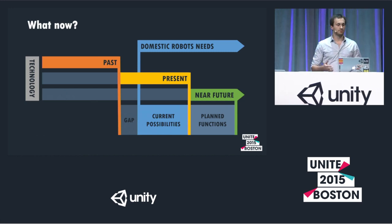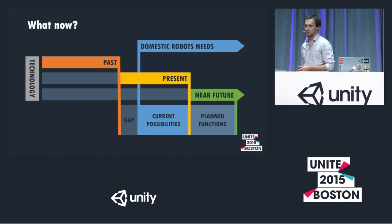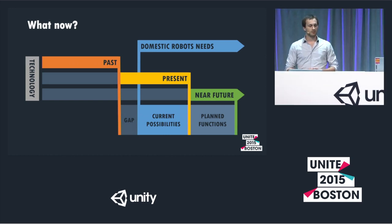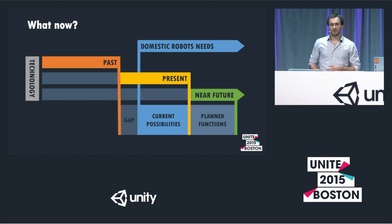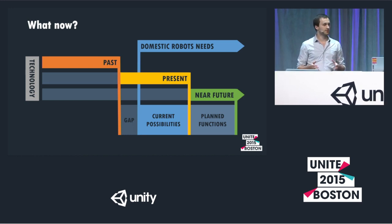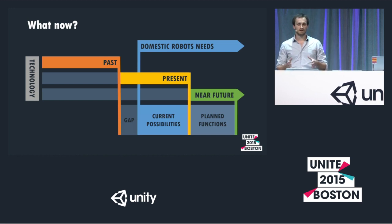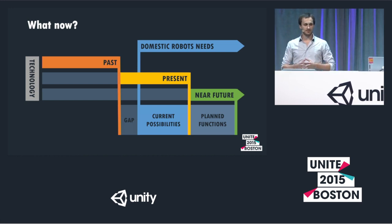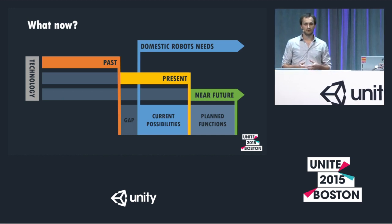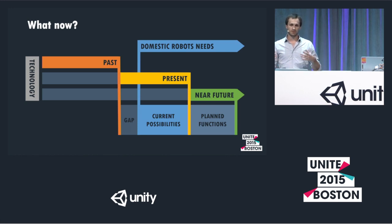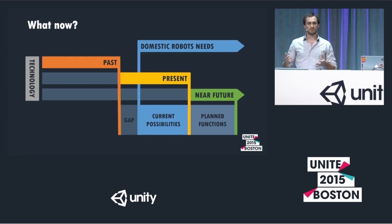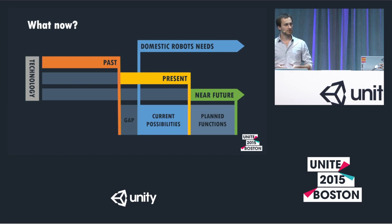What about now in robotics? There is a growing need in robotics that you can see on the graph, and past technology can't afford that. Now, present technology can do something with domestic robots, but the main thing is that the near future promises a lot of applications in domestic robots. So this is the time to build a robot that can fit near-future technologies and have applications in the present.